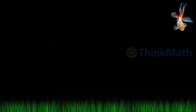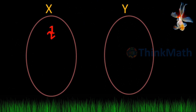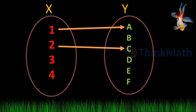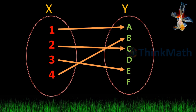See an example: a function f from x to y. The image of 1 is a, 2 is c, 3 is e, 4 is b. So every image is distinct. Therefore, this function is one-one.